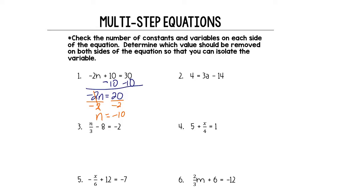Let's double check our work by plugging in negative 10 to our original equation. So we've got negative 2 times negative 10 plus 10. Negative 2 times negative 10 is 20, plus 10 is 30, which is exactly what we're supposed to have. We've done a great job. All right, moving on.